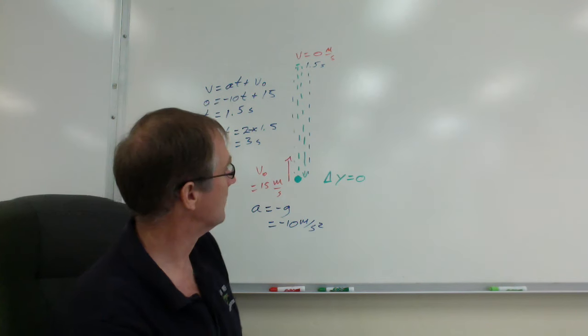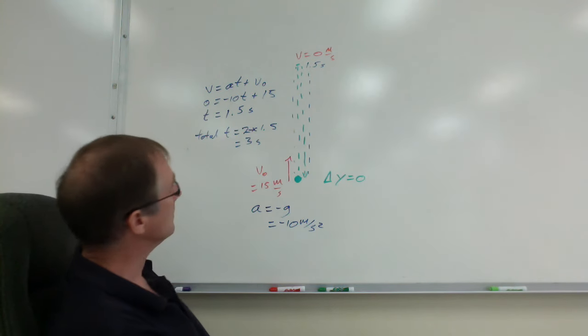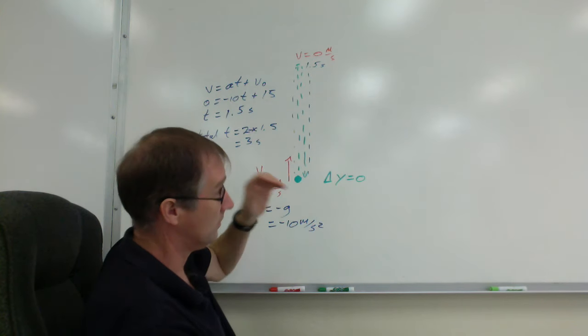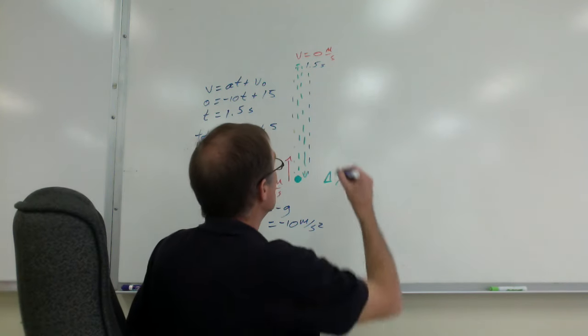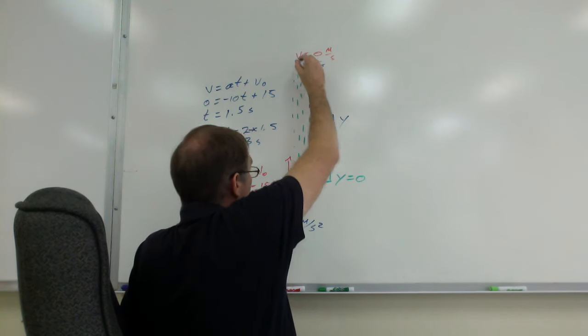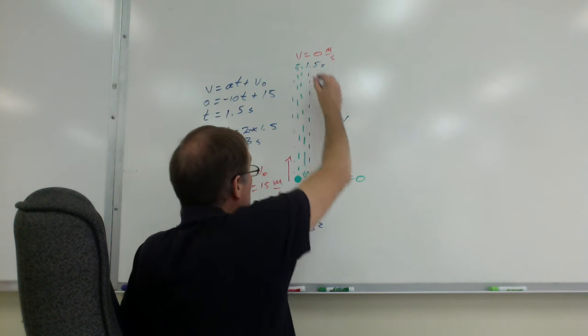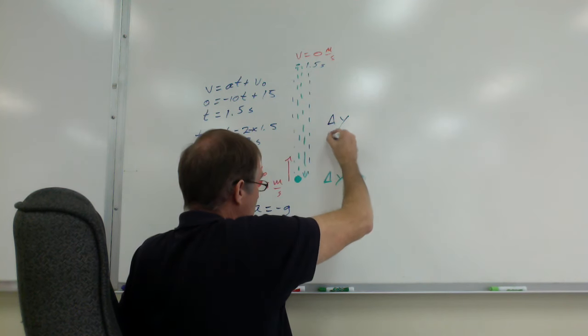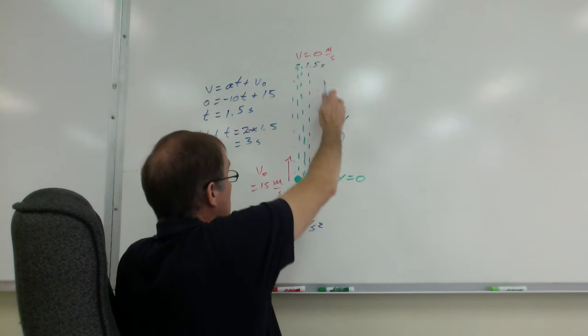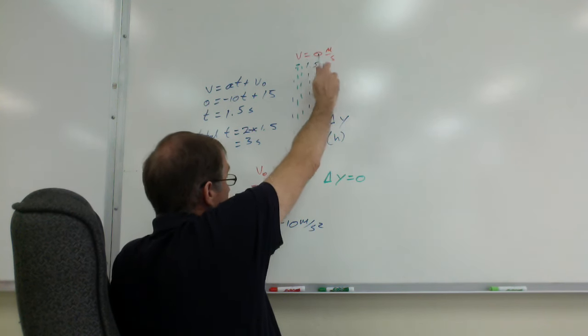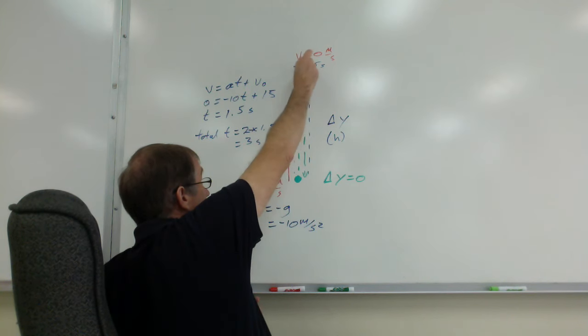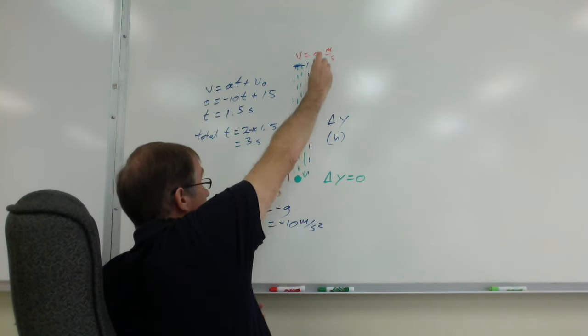How high does it rise? There's a bunch of different ways to do it. I'm going to use delta y, again this delta y, not the one when it comes back down, the delta y up here. It's just delta y at 1.5 seconds, not at 3 seconds. Use the 1.5 seconds to figure out delta y right here at 1.5 seconds when it's stopped.